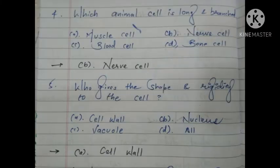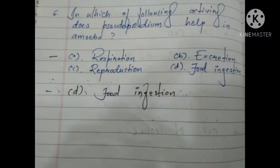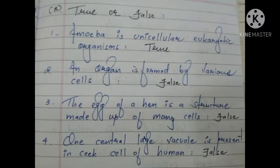Fourth one: which animal cell is long and branched? The answer is B, nerve cell. Fifth: who gives shape and rigidity to the cell? The answer is A, cell wall. Sixth one: in which activity does pseudopodium help in amoeba? The answer is D, food ingestion.